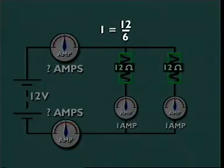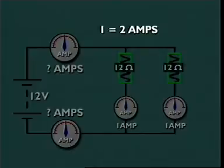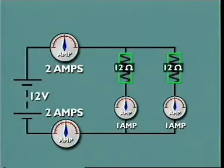...the new current is 2 amperes. So removing the resistors in this circuit halves the current.